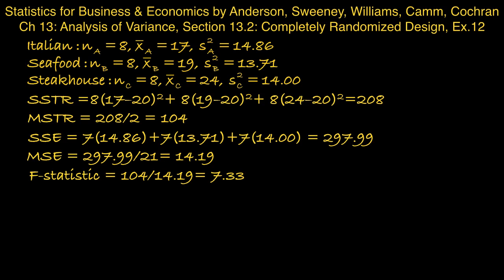And then to find the p-value corresponding to that F statistic, we need to look up an F distribution table, and we're going to use two numerator degrees of freedom and 21 denominator degrees of freedom. And if we look up the percentiles in the table, we find that 5.78 has an upper tail of 0.01. And the F statistic of 7.33 lies to the right of 5.78.